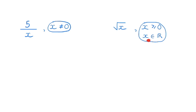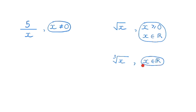We can also say that x is an element of the real number system. If we have the cubed root of x, it is possible to have a negative radicand. For example, the cubed root of negative 8 is negative 2. So in this case, because we have an odd index as opposed to an even index, I would say that x just has to be an element of the real number system. It is okay to have a negative radicand if the index is odd.